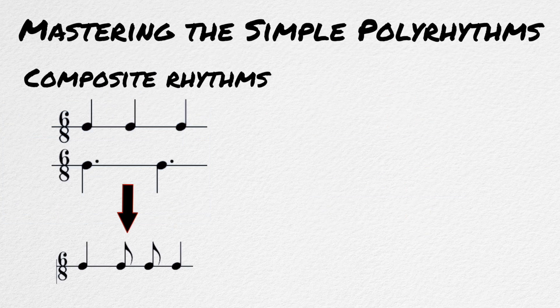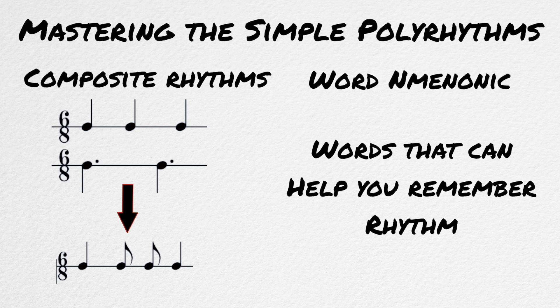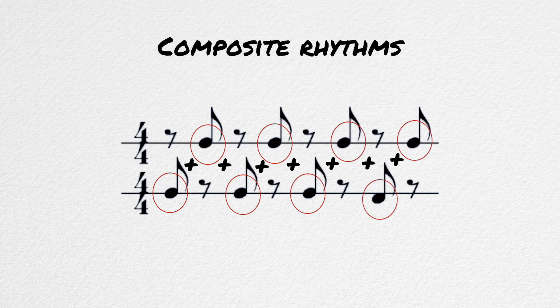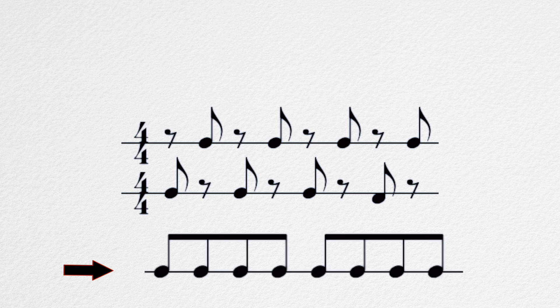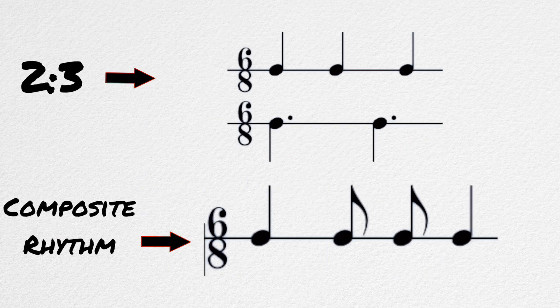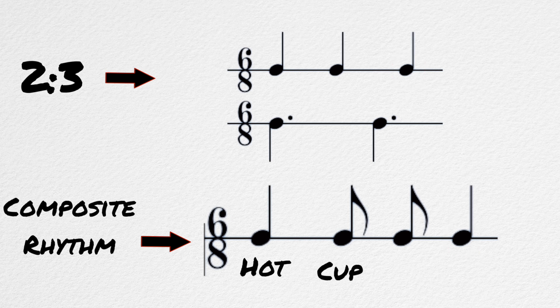For the less complex polyrhythms, the easiest way to both understand and perform them is to learn their composite rhythms, and then assign a mnemonic phrase to help you remember the rhythm. A composite rhythm is the sum of rhythms happening in various parts. So, for example, if one voice plays only eighth notes on the beats, and another voice plays only eighth notes off the beats, the resulting composite rhythm would be straight eighth notes. The composite rhythm of two against three is — and a great way to remember that is with the mnemonic: hot cup of tea.